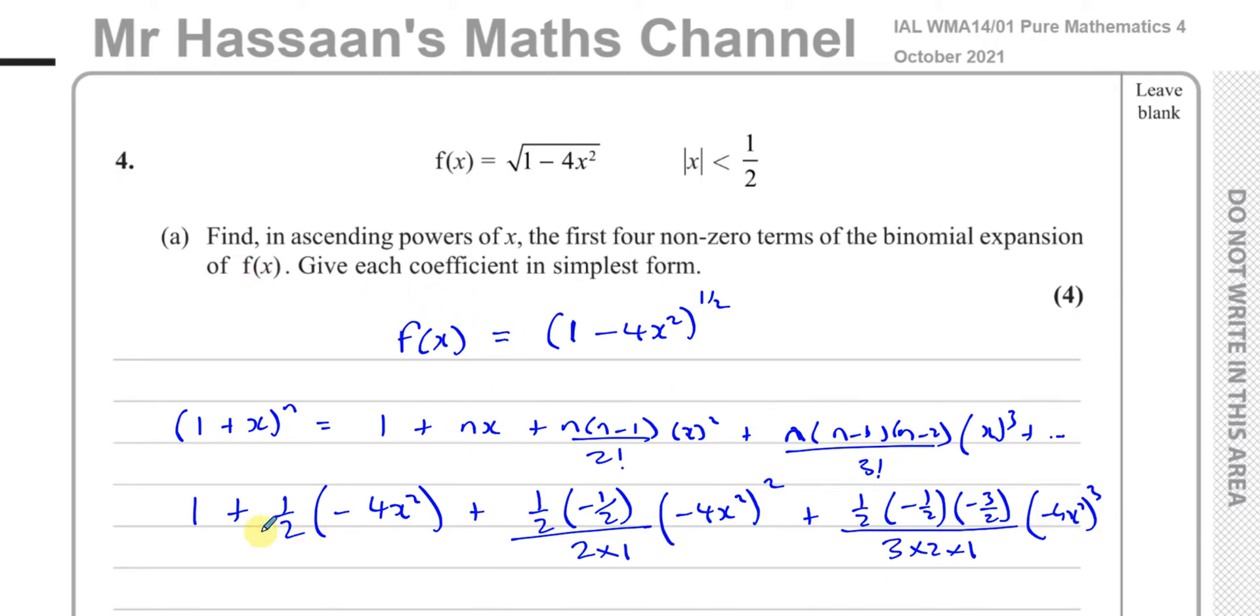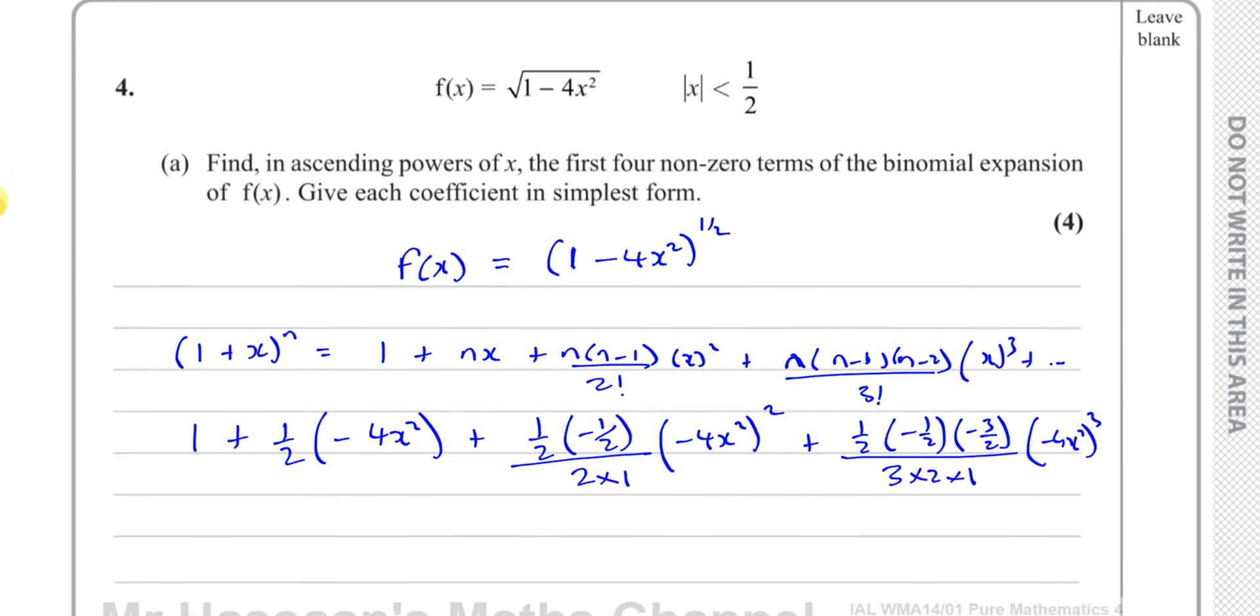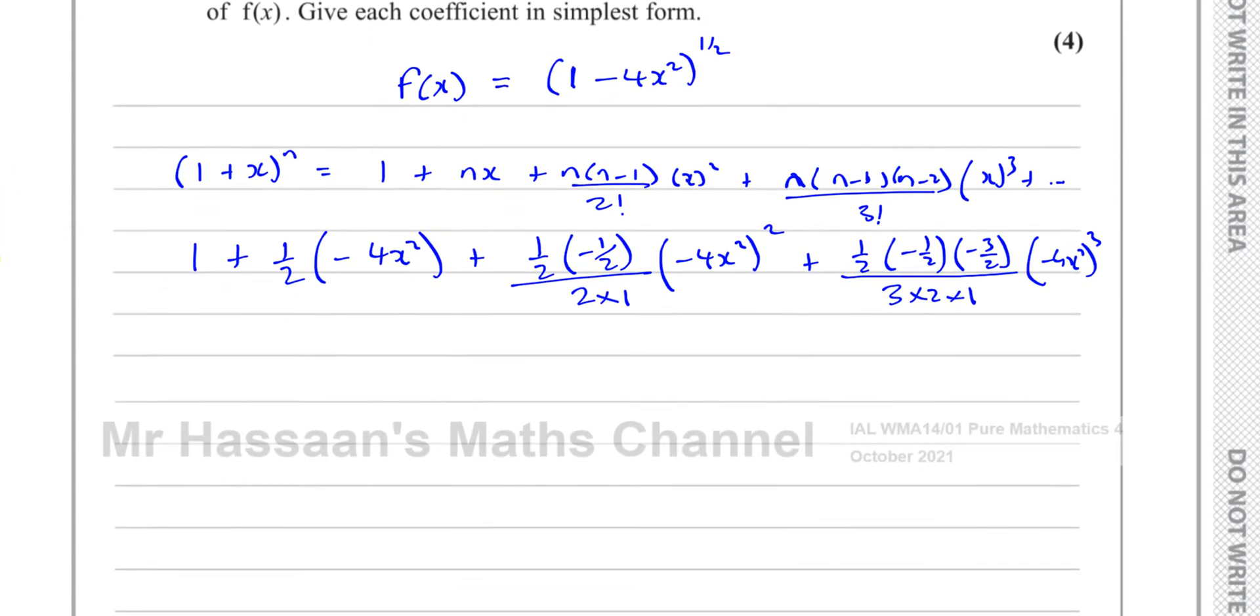They want the first 4 terms: 1, 2, 3, 4. Hopefully none of these will be 0, and that will be the first 4 non-zero terms. So that's a half, that's going to give you minus 2x squared. And here you're going to have negative, that's going to become positive, you're going to square negative, and there will be a negative here, so you have negative, that's 1 over 8, and that's going to be times 16x to the power of 4.